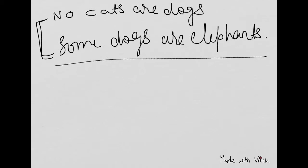So what is rule number two: if you write cats and dogs and dogs and elephants, then this common term will not be there in the conclusion.